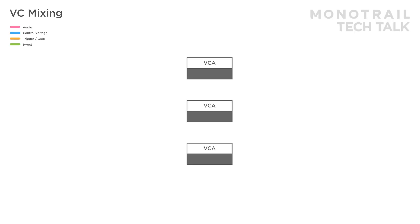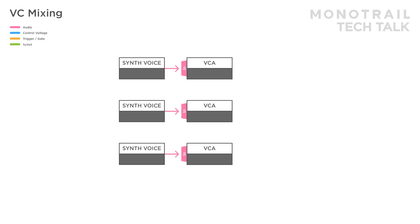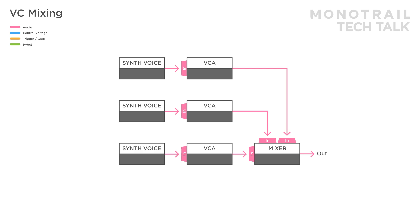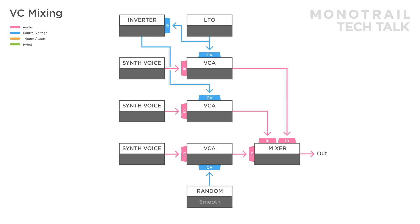The same concept can be used to create a voltage-controlled mixer. You can take as many VCAs as you like and feed them things like complete synth voices or complex drum mixes. Just mix the outputs of the VCAs and you have voltage control over the volume of each element in the mix. You can use something like a random voltage or the crossfader trick with one regular and one inverted LFO. This is great for complex self-playing patches or generative drones.